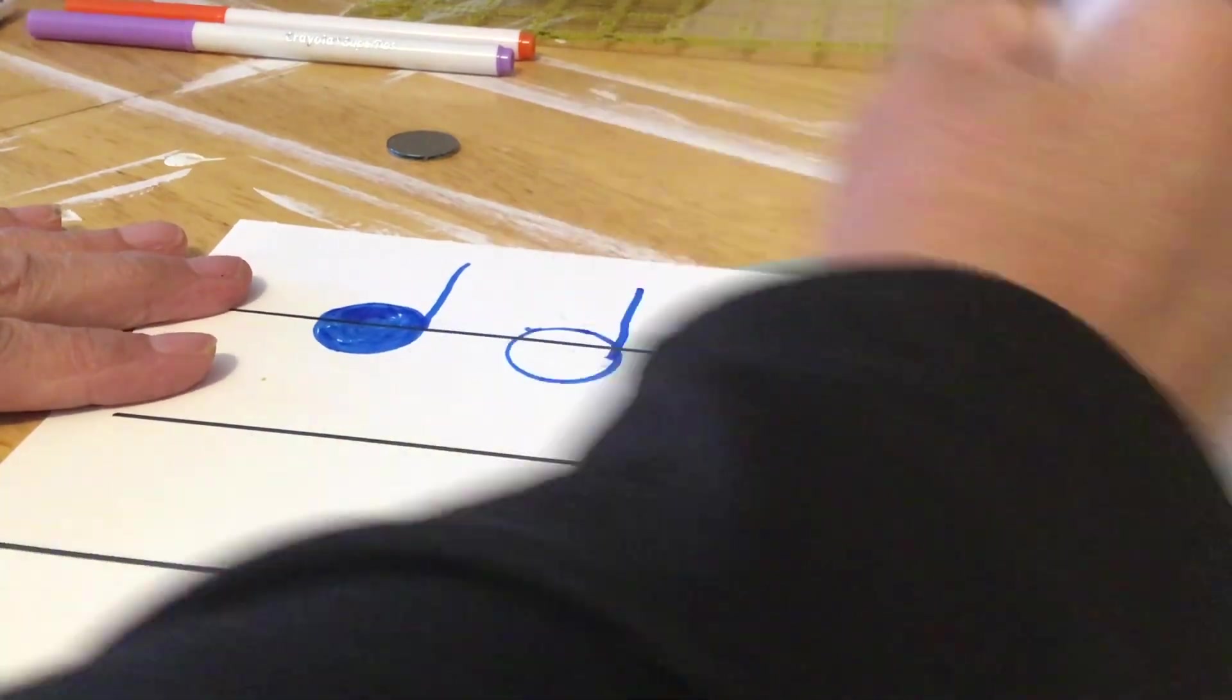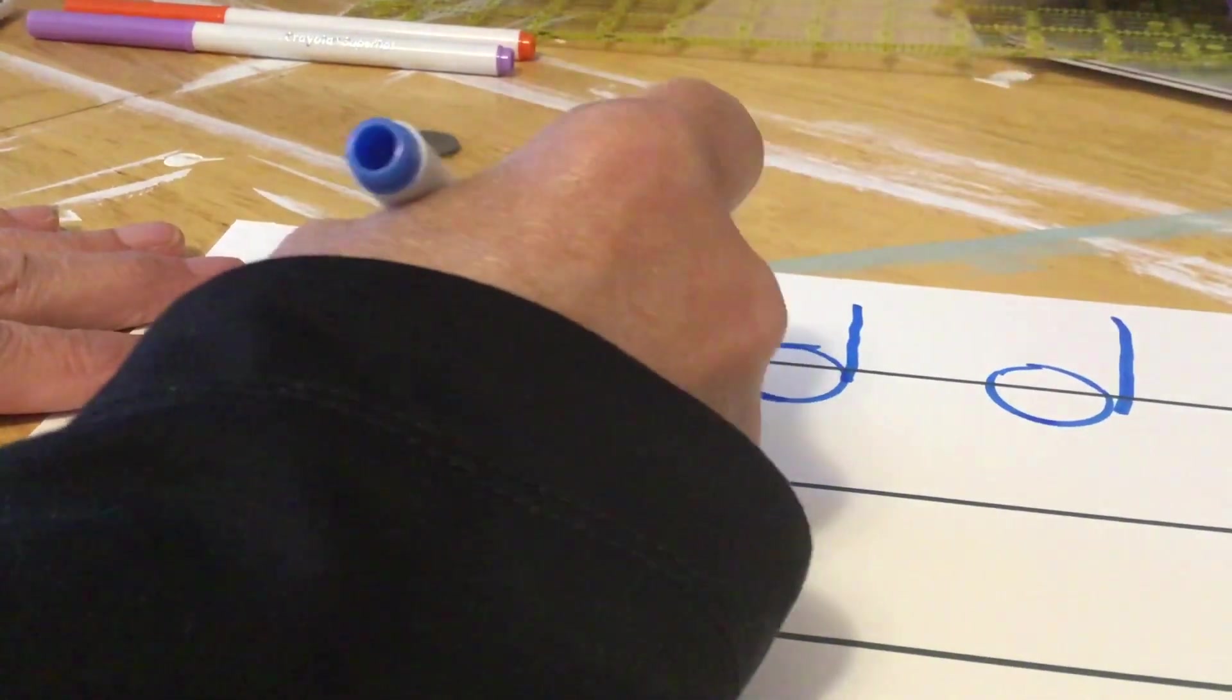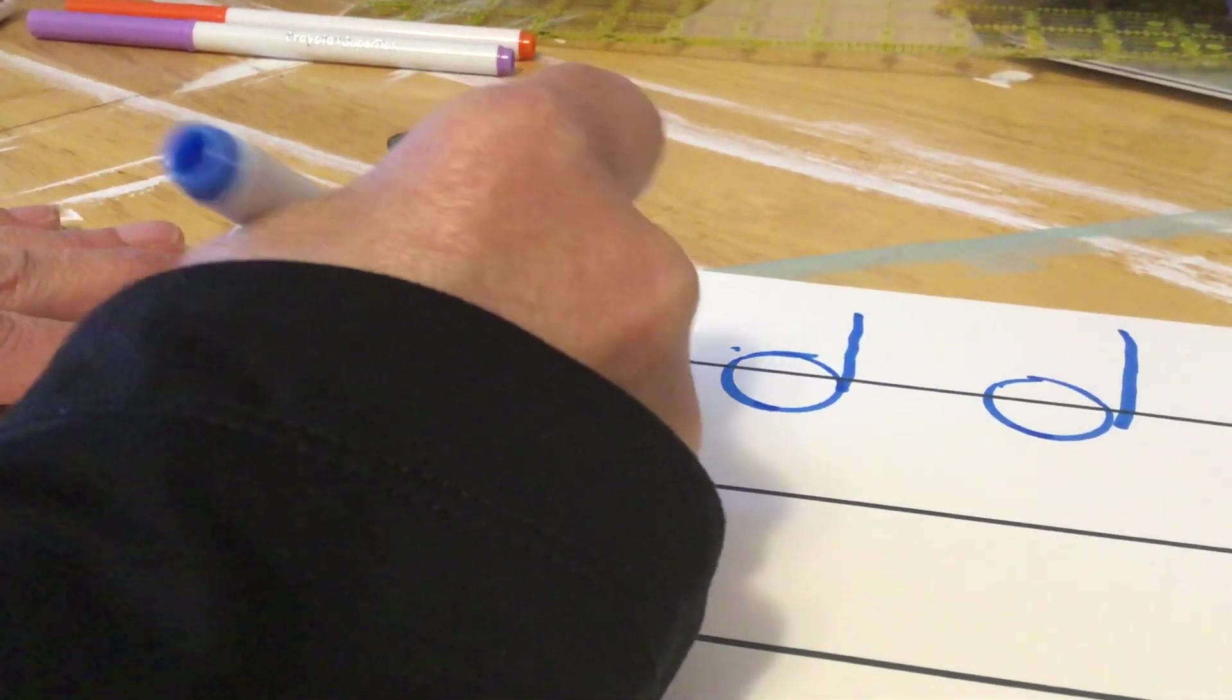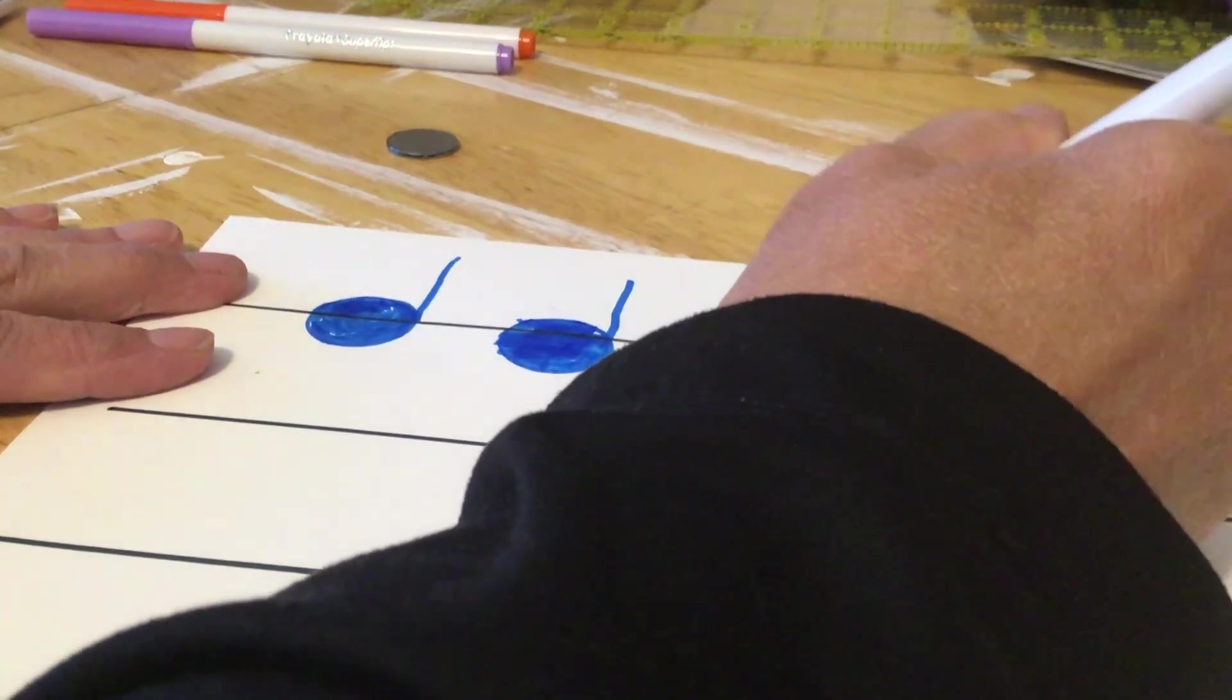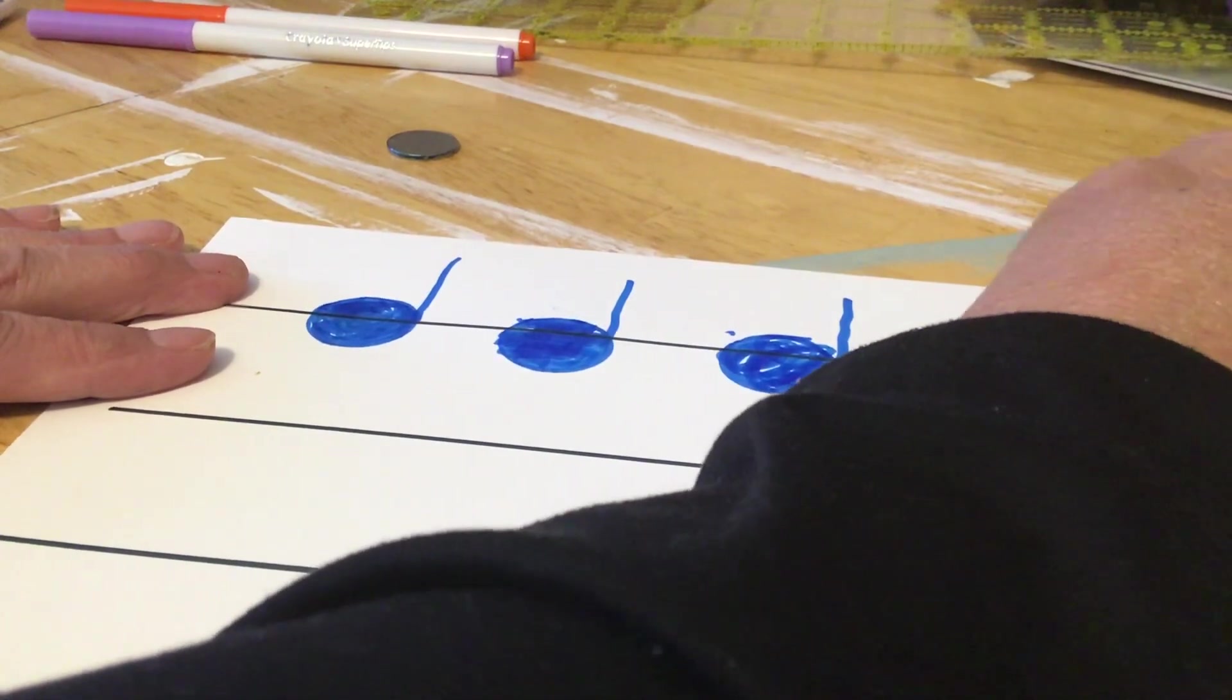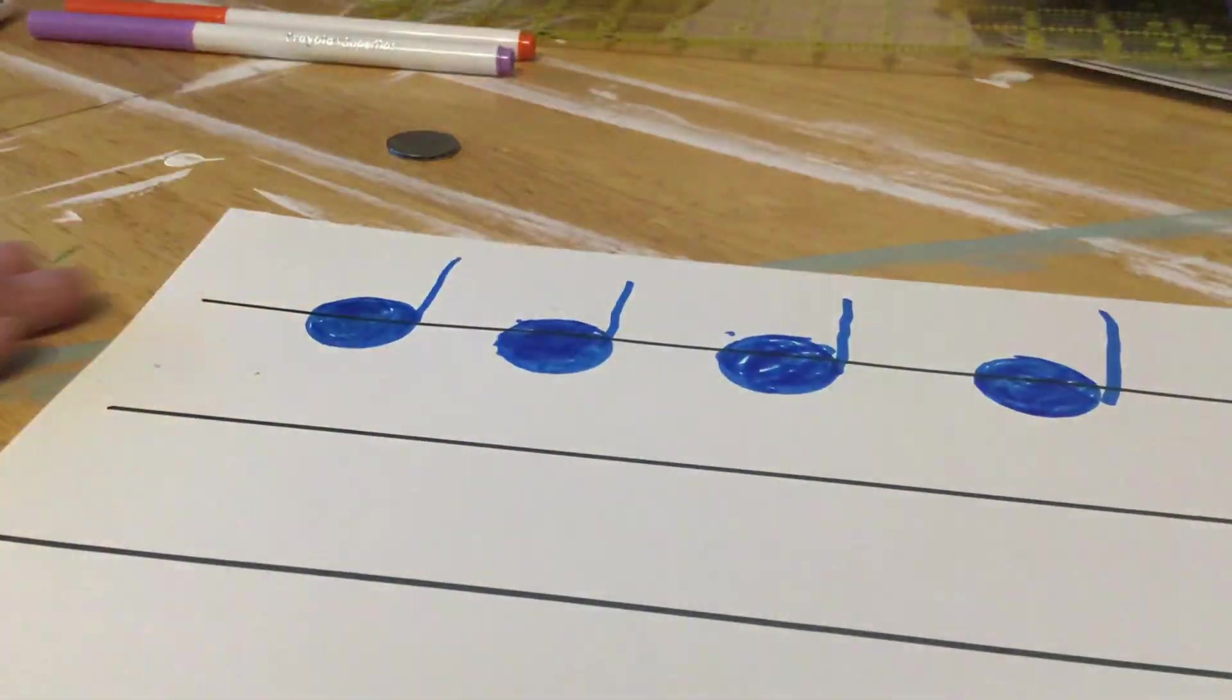Fourth one. And then I'm going to draw my stems, and then I'm going to shade them in. If I don't shade them in, then they're a different kind of note. So shading them in to get your do, your quarter note.